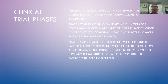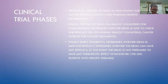Phase one is testing of drugs on healthy volunteers for dose ranging. It determines whether the drug is safe and checks for efficacy. There are about 20 to 100 normal healthy volunteers — or cancer patients if it's a cancer drug being studied. This is the point where we're looking to see: is it safe to use in people?